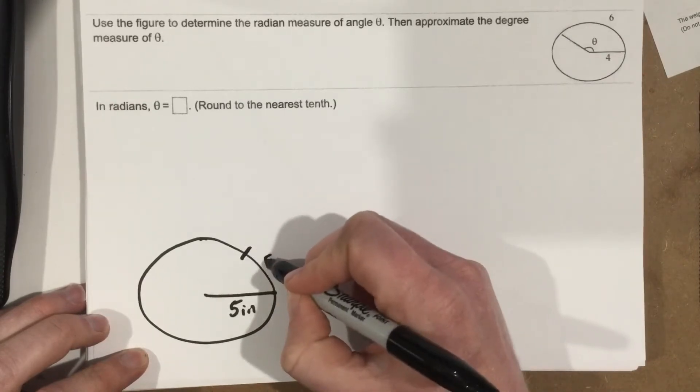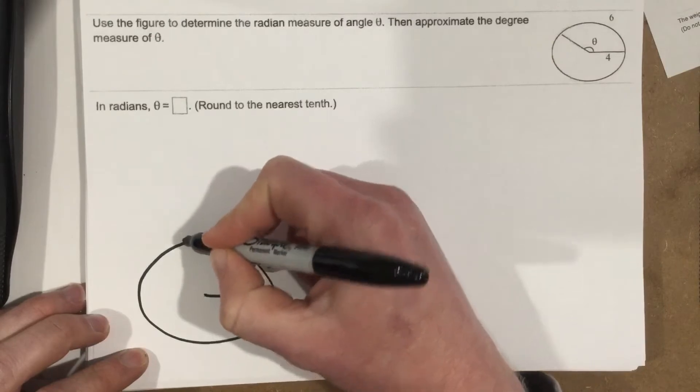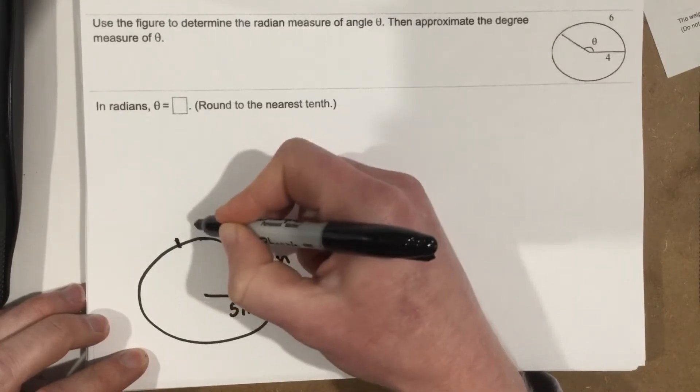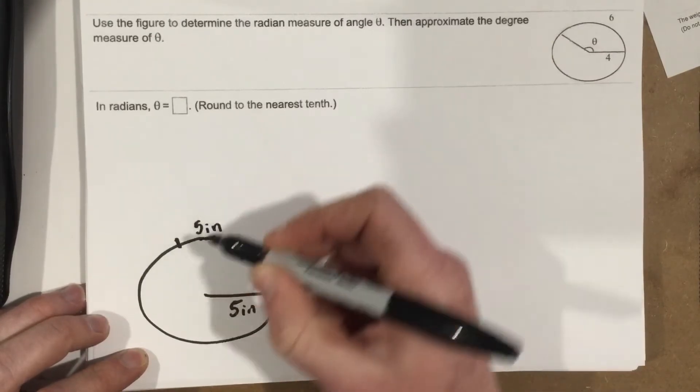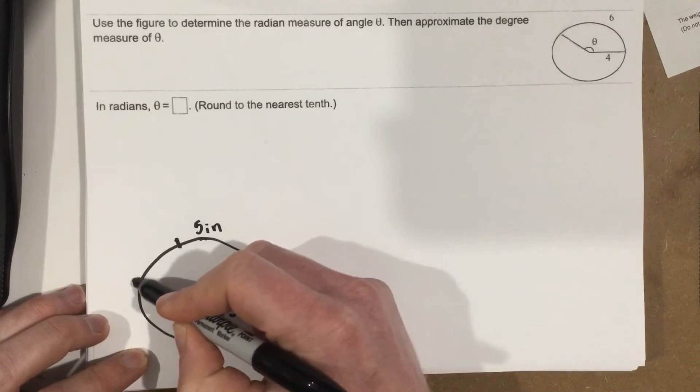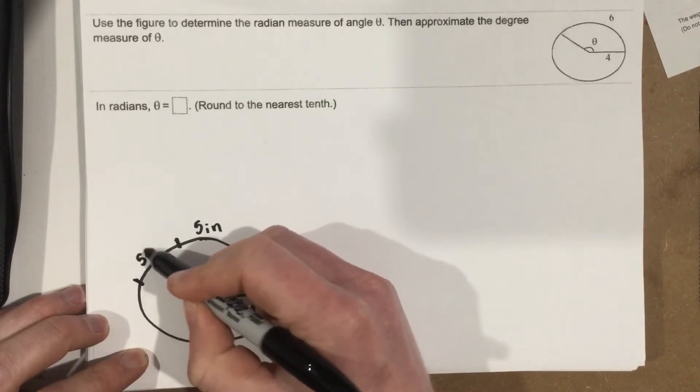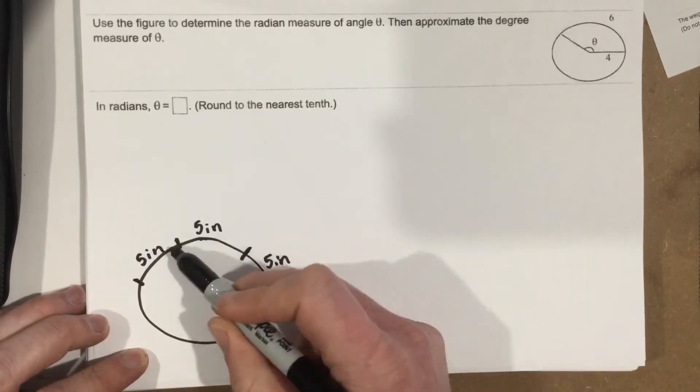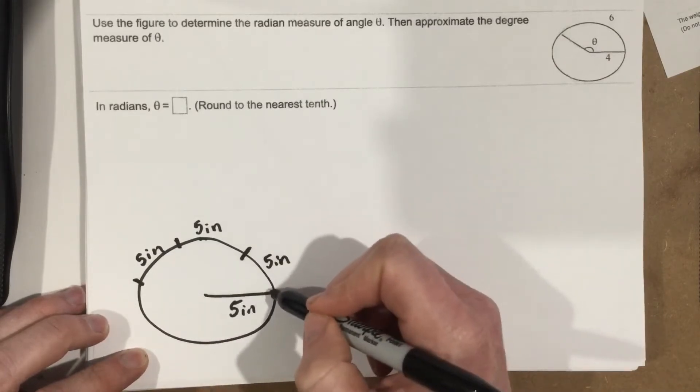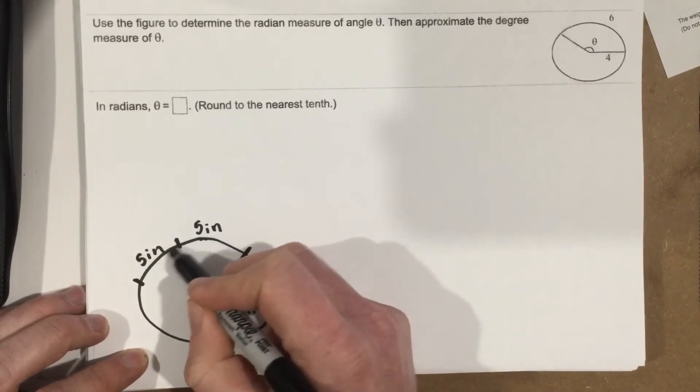So this is a 5 inch mark. I go another 5 inches, that takes me to about right there. So there's another 5 inch mark. I do another 5 inches, it takes me to about right there. That's another 5 inch mark. Each of these is called a radian. So it's 1 radian, 2 radians, 3 radians.